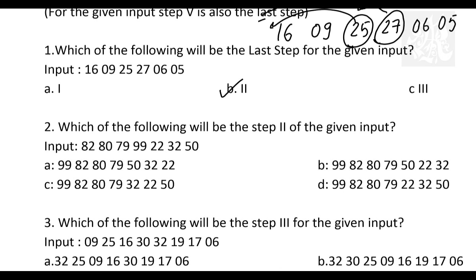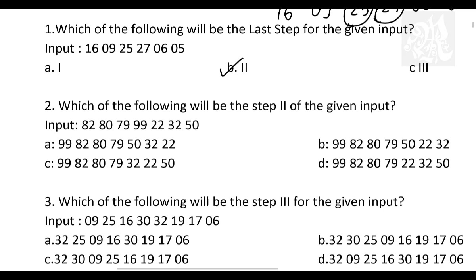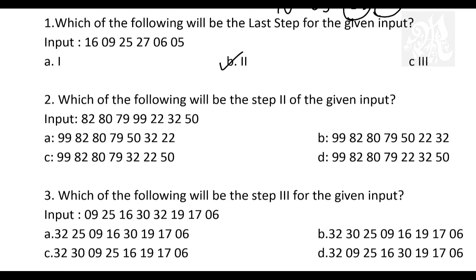Which of the following will be the step 2 for the given input? Input is given to you. What are the first step? 99. After the first step, how does the string look? String looks like 99, 82, 80, 79, 22, 32, 50. Who will take the next step? 82 is already in its place. 80 is already in its place. 79 is already in its place. So we'll take 50. So what will it be? 99, 82, 80, 79, 50, 22, 32. Where do you see this? B. And that's the answer.